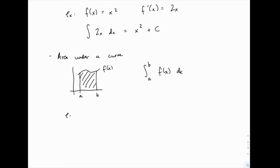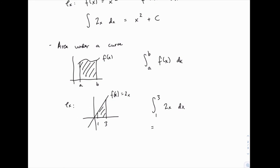So for example, we can do something like if we have the function, let's say we have the function 2x, to keep things really simple, and we want to find the area from 1 to 3. That would be the antiderivative from 1 to 3 of 2x dx.